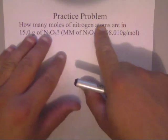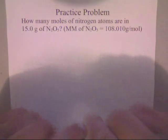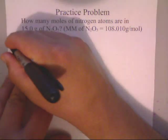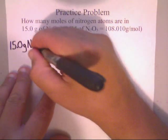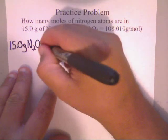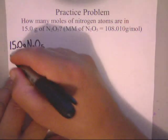We're going to be using stoichiometric calculations to do this. You write down the given, which is 15.0 grams of N2O5. That's our given, we're going to put it over 1.